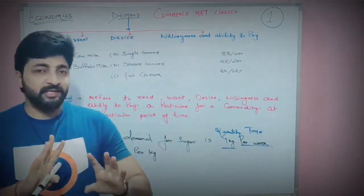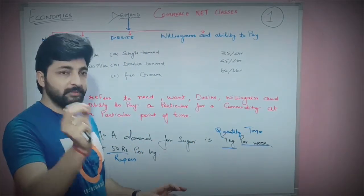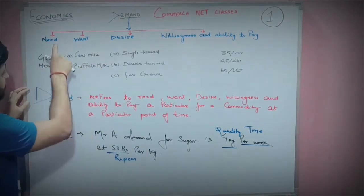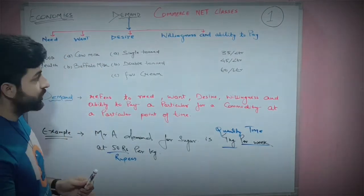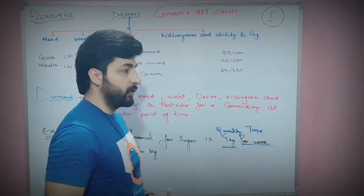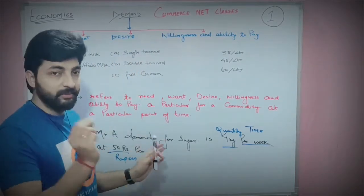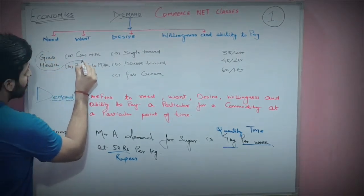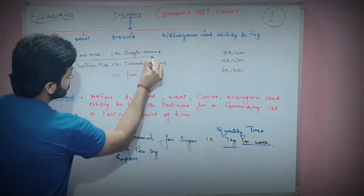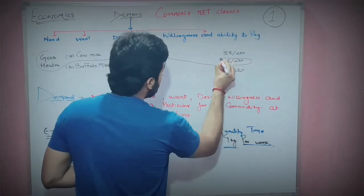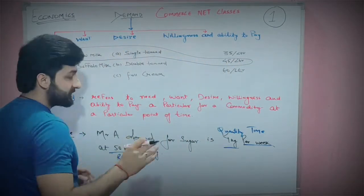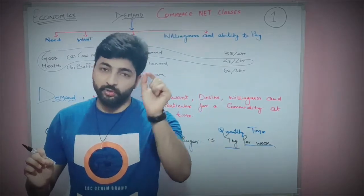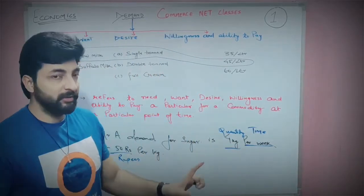Now, let's understand this. The demand is important — we need to know what we are wanting. For example, the demand is that the price is 45 rupees. I have an option to buy two, but that means I will not buy one if I only want one. I want to buy cow milk, single-tone. If all these things are satisfied at the same time, I will demand it — that is simple demand.